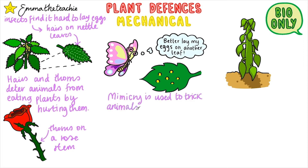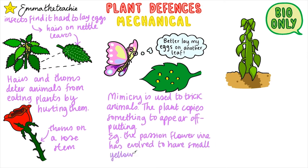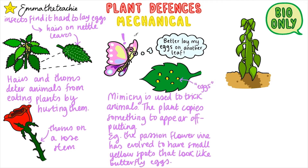Mimicry is something that's used to trick animals — the plant copies something to make it appear off-putting. For example, the passionflower vine has evolved to have small yellow spots on its leaves. These look like butterfly eggs. This deters butterflies from laying eggs on the leaves, as it appears there will be more competition from other caterpillars when the eggs hatch. The butterflies will lay their eggs on different plant leaves, reducing damage to the passionflower vine.